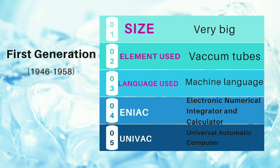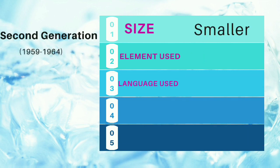The input given to them was also in the form of 0 and 1, and this language was not understandable to a normal person. Today's computers can understand other languages as well because they have software that can interpret them. The question I asked was about ENIAC and UNIVAC. ENIAC is Electronic Numerical Integrator and Calculator, and UNIVAC is Universal Automatic Computer. ENIAC and UNIVAC were the first computers of the first generation, and UNIVAC was the first business computer.